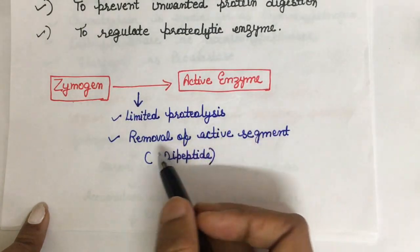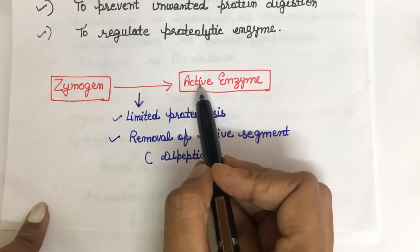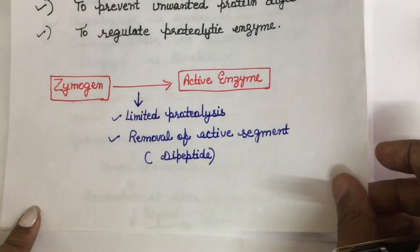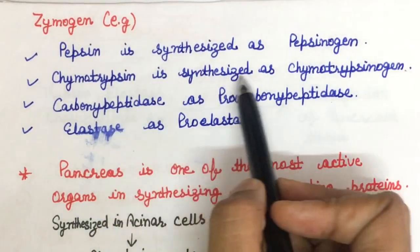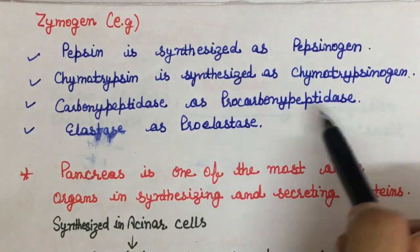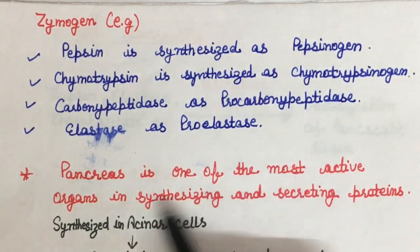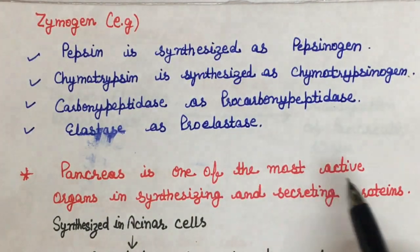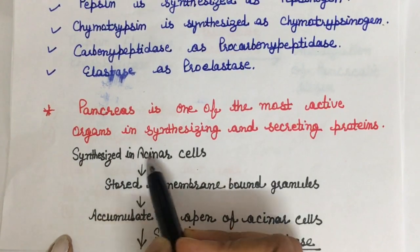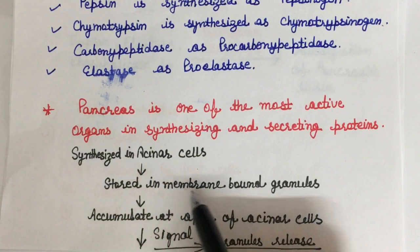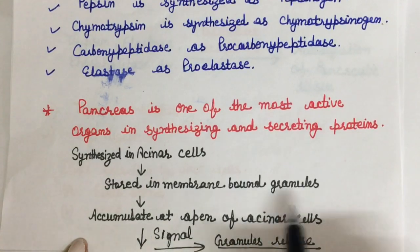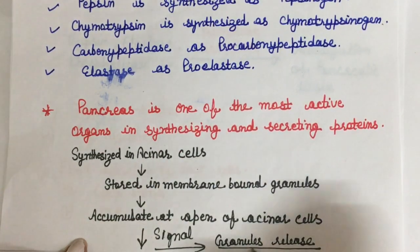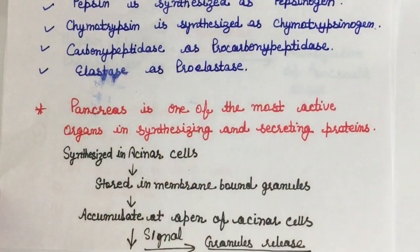When zymogens undergo limited proteolysis — when an active segment such as a dipeptide or another region is removed — they get converted into active enzymes. Examples include pepsin synthesized as pepsinogen and chymotrypsin synthesized as chymotrypsinogen. The pancreas is one of the most active organs in synthesizing and secreting proteins. Zymogens are synthesized in acinar cells of the pancreas, stored in membrane-bound granules, and accumulate at the apex of acinar cells until a nerve impulse or hormone signal triggers their release into the gastrointestinal tract.